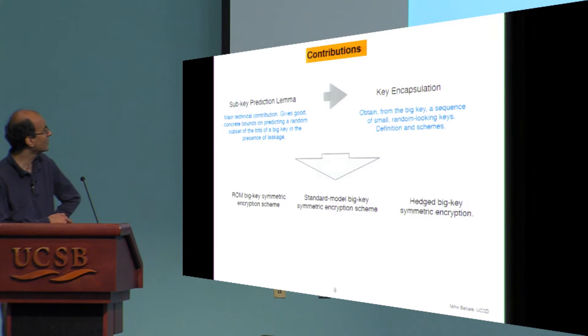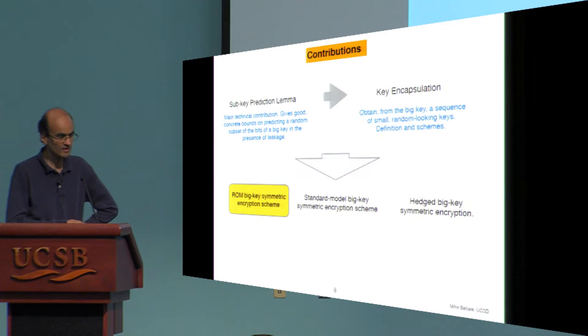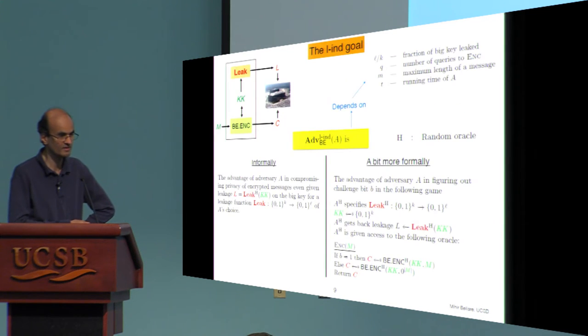The first scheme is a random oracle model one, a slightly less efficient standard model one. These provide only privacy, and then finally we look at what we call hedged encryption as a way to get a little bit of integrity. So on the rest, I'll tell you a little more about all this, mostly focusing on the random oracle scheme.